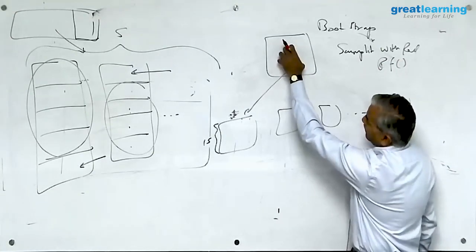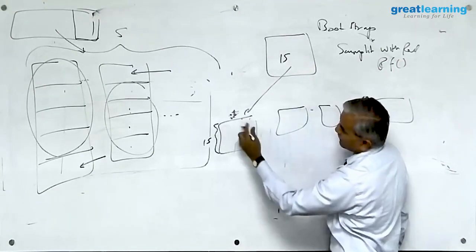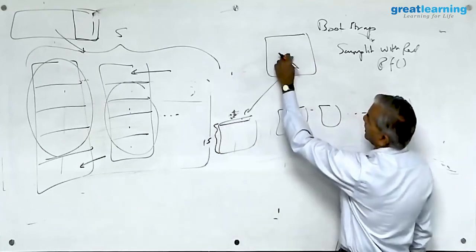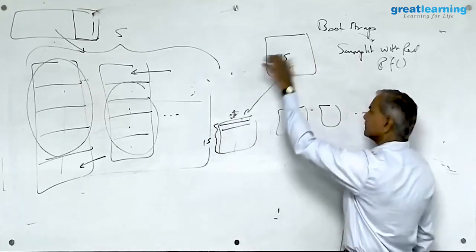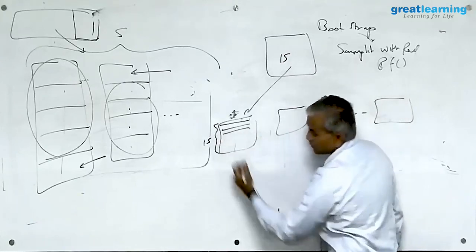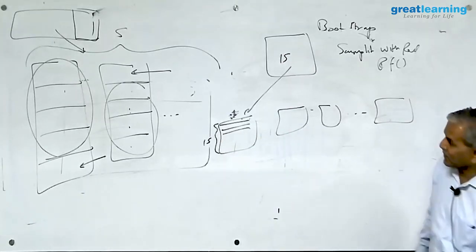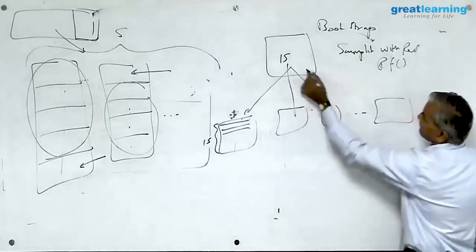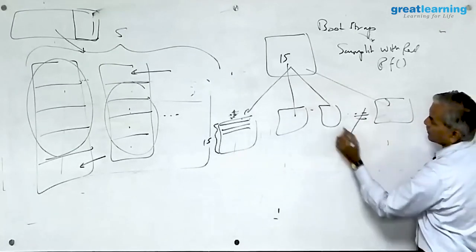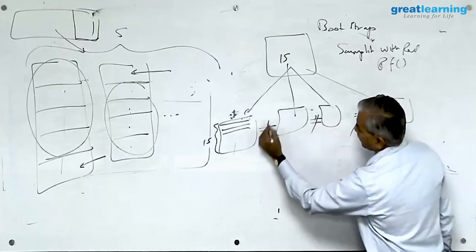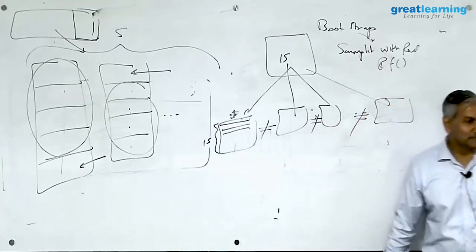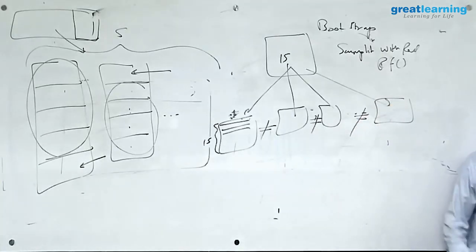So you take randomly pick up one record, put it here. Go back and take randomly pick up one record, put it here. Take randomly one record, put it here. You might be having duplicates. You might be having triplicates. Do that exercise for all of them. They are unlikely to be 100 percent equal, but there will be lot of overlap between them, no doubt.